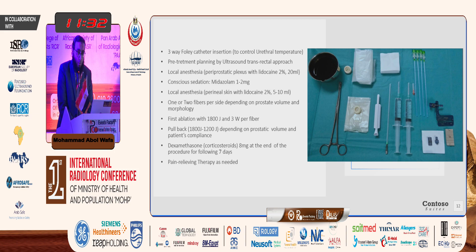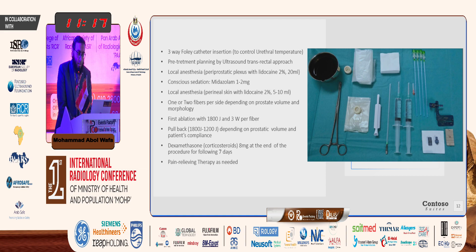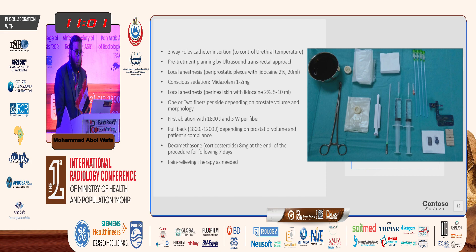We usually use a three-way Foley catheter to control the urethral temperature and avoid urethral injury. Planning of the treatment uses a transrectal approach. We give local anesthesia in the periprostatic plexus, and the patient may need light conscious sedation. We introduce one or two fibers on each side beside the urethra.